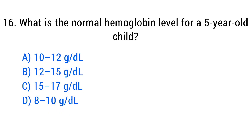Question number 16. What is the normal hemoglobin level for a five-year-old child? The right answer is option A: 10 to 12 grams per deciliter.